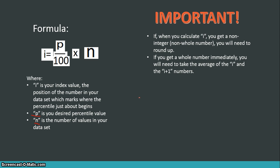But in the event that I do get a whole number immediately after solving for i, then I'm going to need to take the average of the number in the i position and the i plus 1 position. Don't worry if that doesn't make sense, because I'm going to go through an example to show you exactly what it means. Let's get to that example.